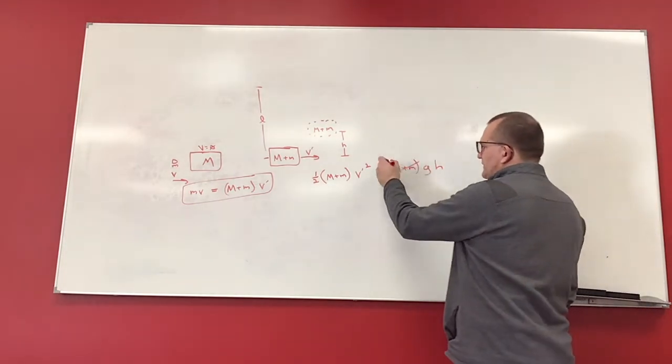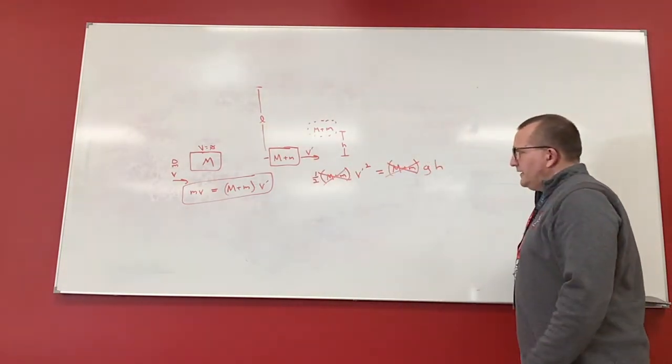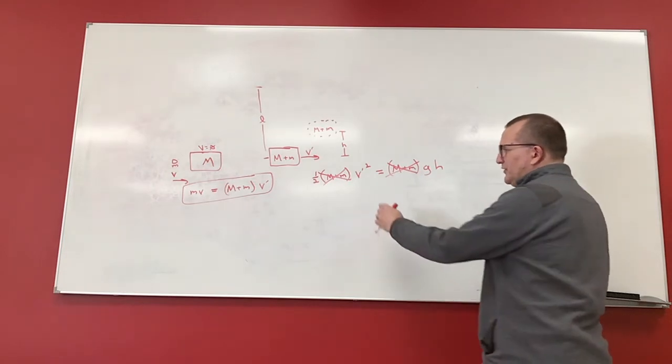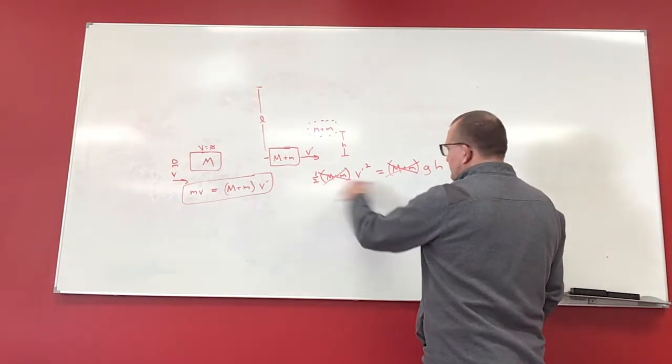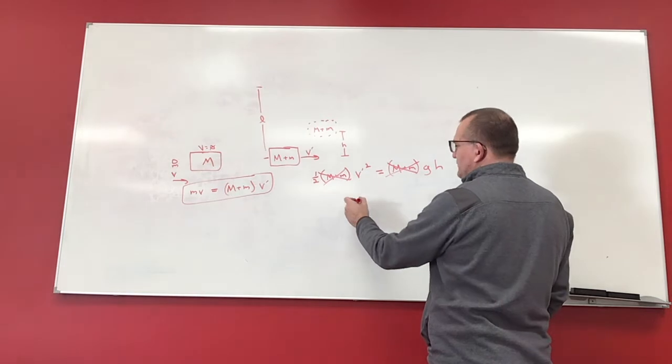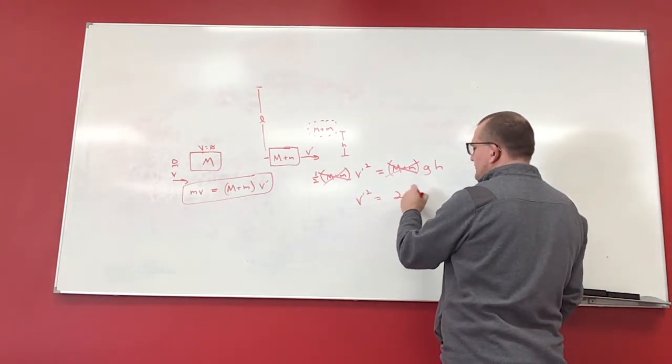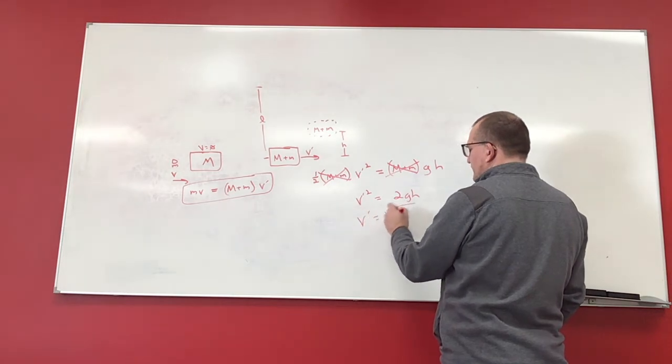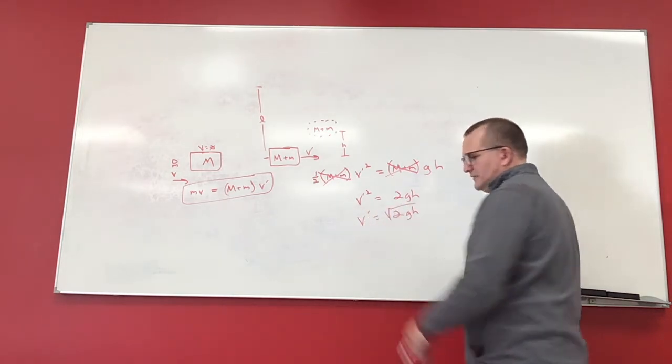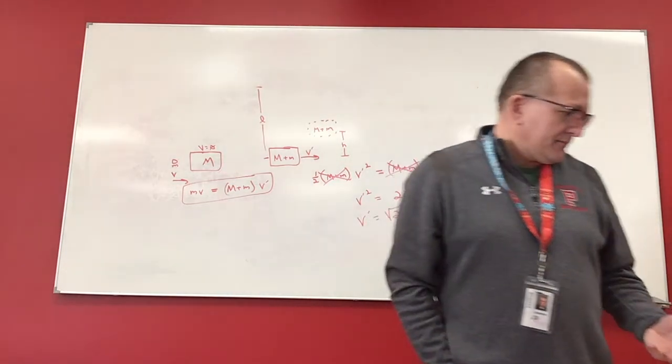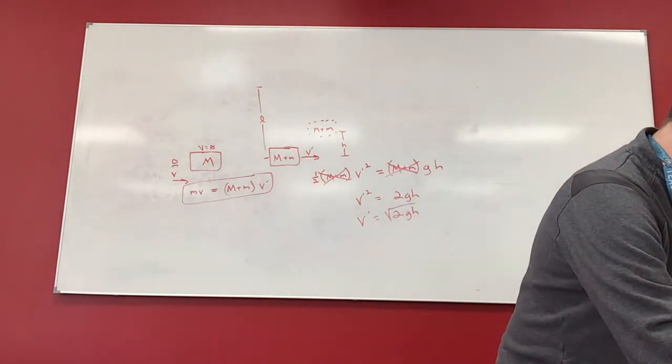Well, my (m + M)'s cancel. And I'm going to solve this in terms of V prime. So I'm going to divide both sides by one-half or multiply both sides by two, and I get V prime squared is equal to 2GH. Take the square root. So V prime is equal to the square root of 2GH.